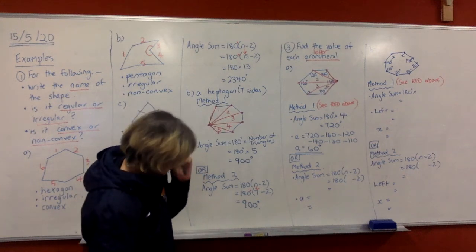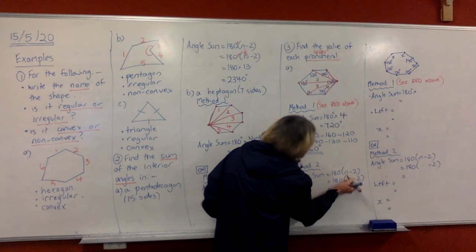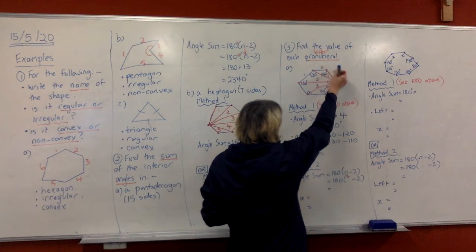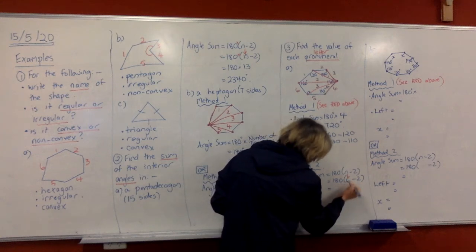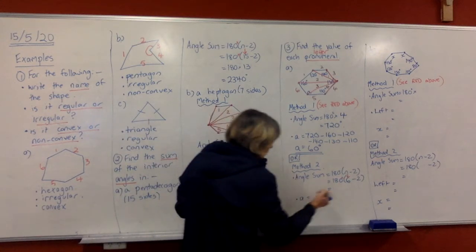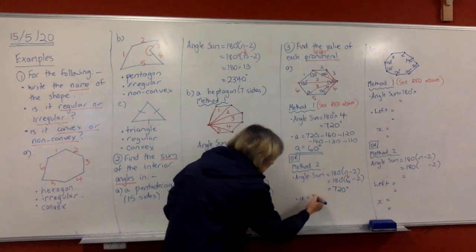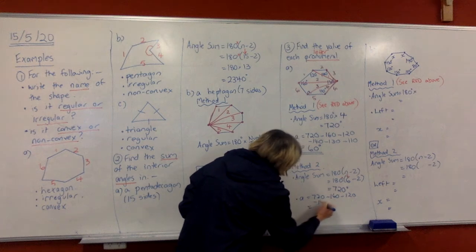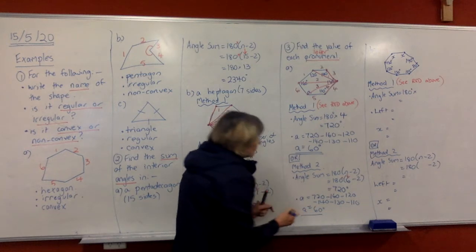Okay. Now you could do it using the second method. The second method, remember, is using the formula 180 by N minus 2. So the number of sides on this shape, if we count them, 1, 2, 3, 4, 5, 6. So we put the 6 in that spot there for the number of sides. And then we put that into our calculator just like that, and it will give you 720 degrees, same as we've got up there. Then to find A, you do exactly the same working as we did up here.